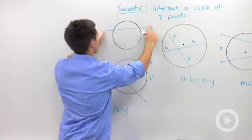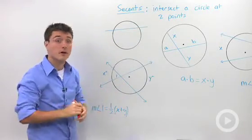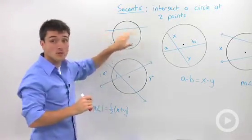Let's say I had a line segment like this, that would also be considered a secant because it's intersected the circle in two places.